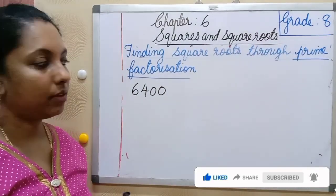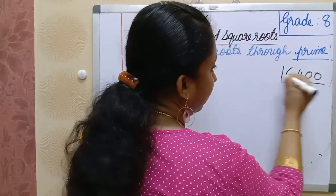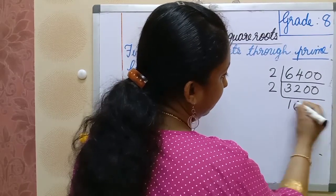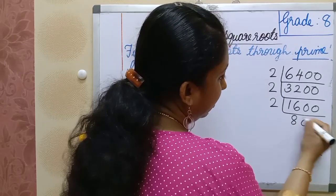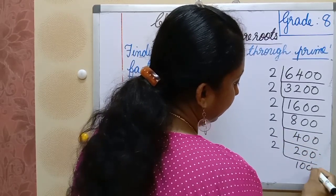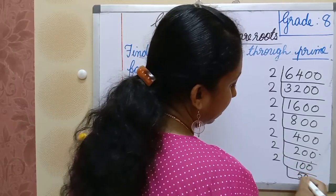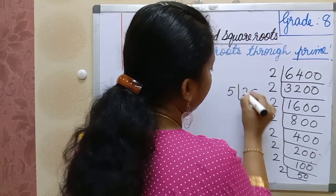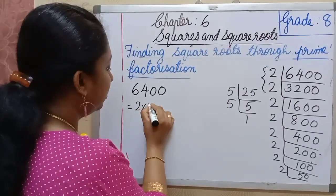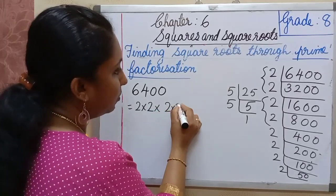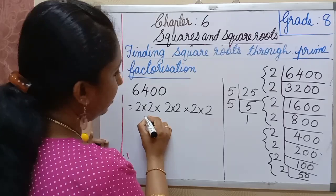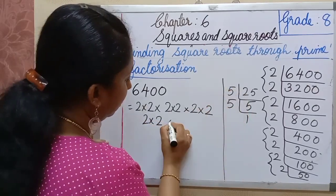Let's factorize 6400. Dividing by 2 repeatedly: 6400 ÷ 2 = 3200, ÷ 2 = 1600, ÷ 2 = 800, ÷ 2 = 400, ÷ 2 = 200, ÷ 2 = 100, ÷ 2 = 50, ÷ 2 = 25, then 25 ÷ 5 = 5, ÷ 5 = 1. So 6400 equals 2 × 2 × 2 × 2 × 2 × 2 × 2 × 2 × 5 × 5.